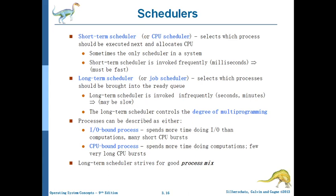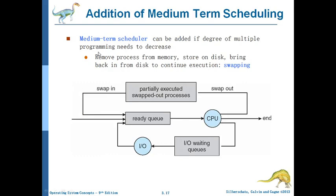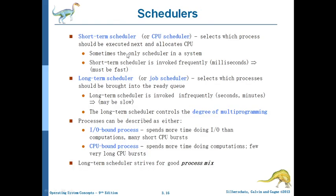We have the short-term scheduler, also called the CPU scheduler, which selects which process has to be next executed in the CPU. It selects a process from the ready queue. We call it short-term because it has to be frequently invoked - in the CPU, processes arrive frequently and it takes decisions in milliseconds. This is called the short-term scheduler, and sometimes it is the only scheduler in the system. It must be very fast.